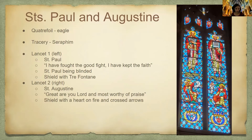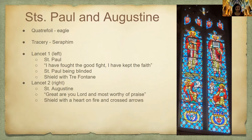Below St. Paul's conversion, we have a shield containing Tre Fontane. When St. Paul was martyred, his head was cut off, and Tre Fontane are the three miraculous fountains that appeared where St. Paul's head bounced after it had been cut off. Tre Fontane is located near the Basilica of St. Paul in Rome, and this is a shield with the symbols of those fountains.